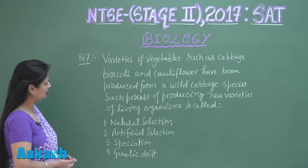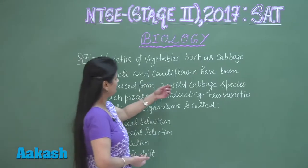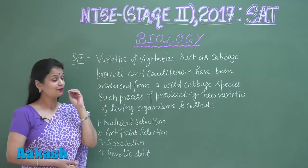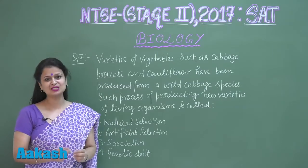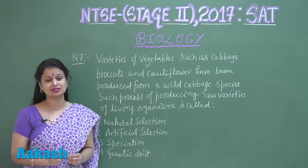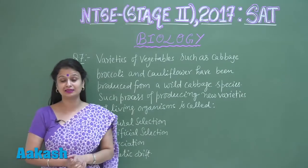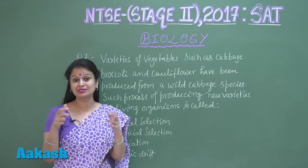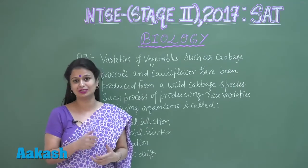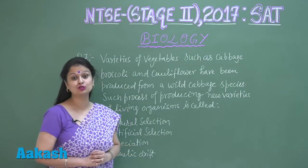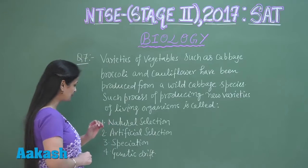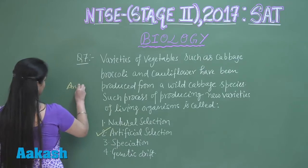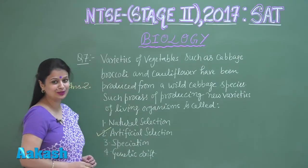Question number seven is a very easy question. Here we have to see that cabbage, broccoli, and cauliflower are all products of wild cabbage. The process involved is artificial selection — under artificial selection, superior or good characters are selected for improving the quality of plants. So artificial selection was used to develop these vegetables, and the right answer is option number two.